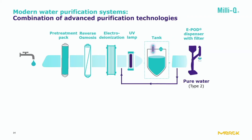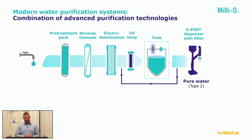The water then goes into the reverse osmosis membrane. This reverse osmosis filtration removes ions at 95 to 99%, and then 99% of all dissolved and large organics, microorganisms and particles.